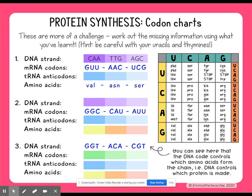Now we're going to take our messenger RNA codons and figure out what the anticodons are in transfer RNA. It's going to look very similar to the DNA strand, only it'll have U instead of T — because G will pair with C, and U will pair with A. So this will be CAA again. For the A's, they pair with U in RNA, so it should be UUG. And then UCG gives us AGC again.